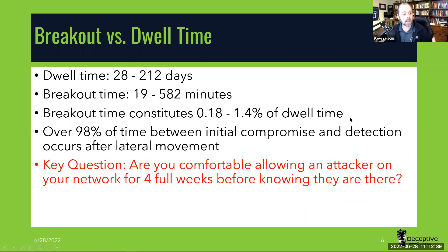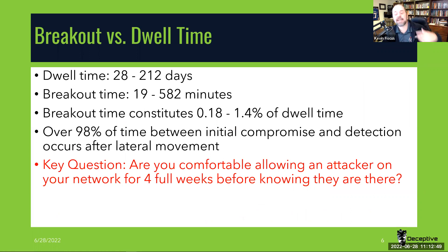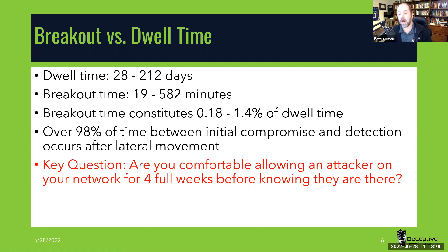That means we've got 27 more days — or potentially 211 days — where the bad guys are doing what they want on our networks before we detect them. To put this in perspective, breakout time is between 0.18% and 1.4% of dwell time, meaning over 98% of the attacker's time on our network is them moving around without us having any knowledge of them.